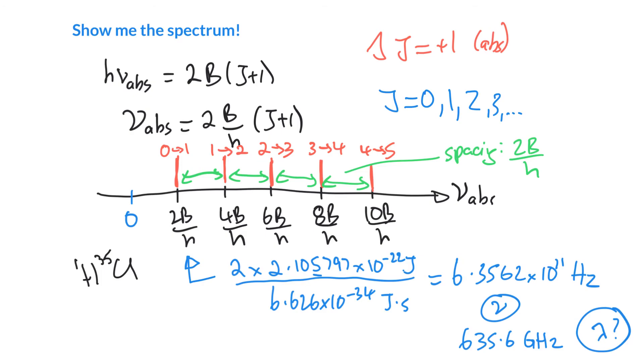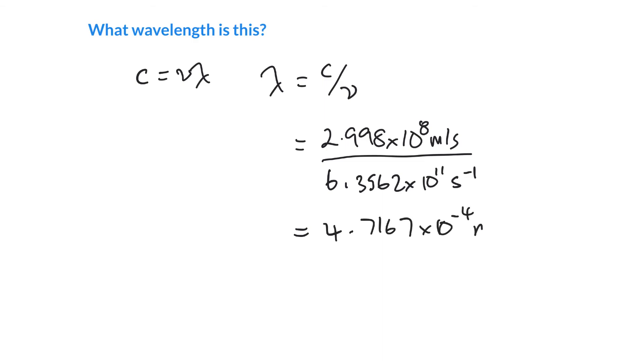I am a lambda man, so we need to convert to wavelength. We remember c = νλ. So λ = c/ν. C is the speed of light, 2.998 times 10^8 meters per second, and our frequency is 6.3562 times 10^11. Those numbers are just way too large for me to wrap my head around.